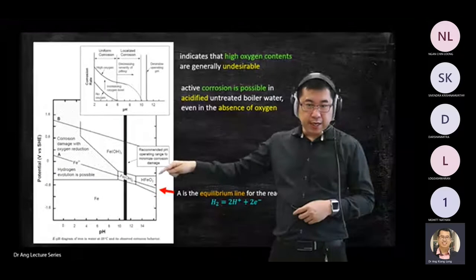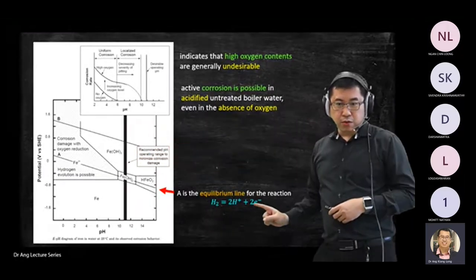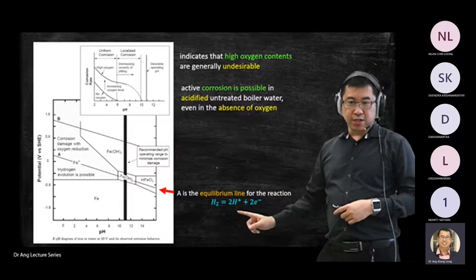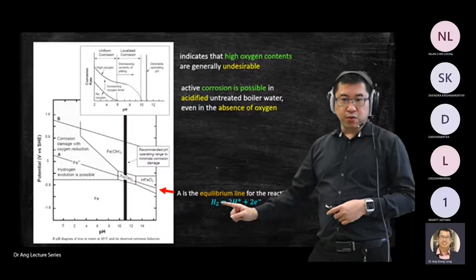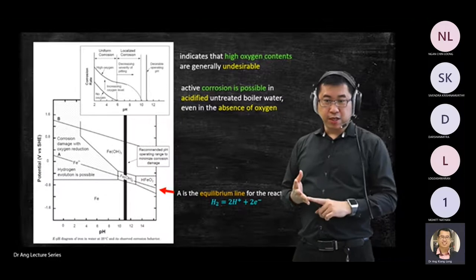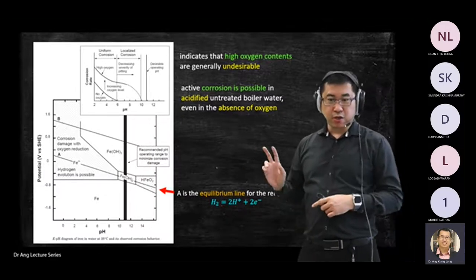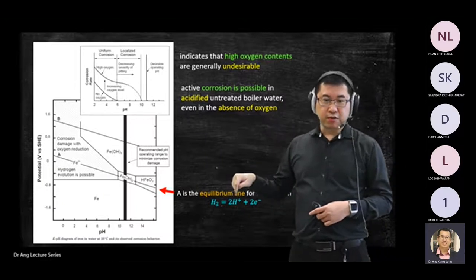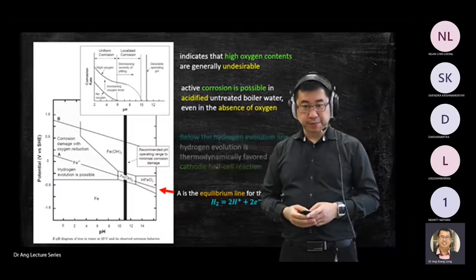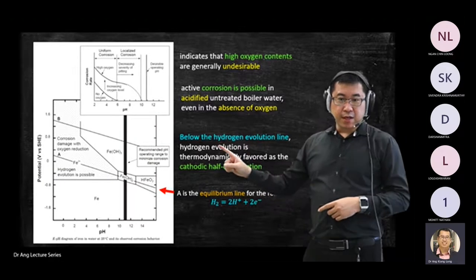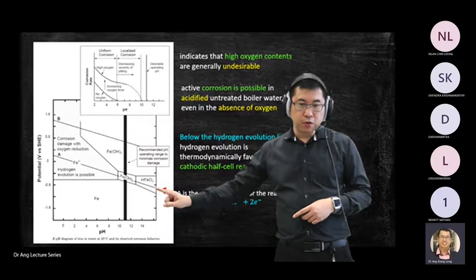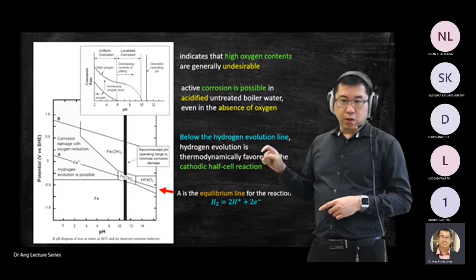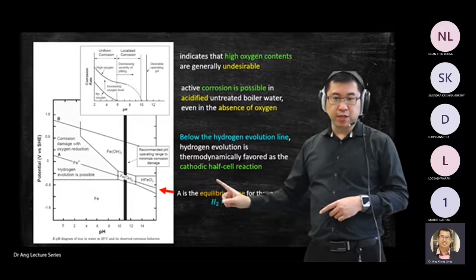Just to remind you, we have line A and line B. Hydrogen can expand to two electric charges: H⁺ and two electrons. In corrosion, when you have water, hydrogen, and oxygen, corrosion will happen. Even if you remove the oxygen from the water, hydrogen ions will still be there and corrosion will continue. Those processes below line A have hydrogen evolution as the cathodic half-cell reaction.